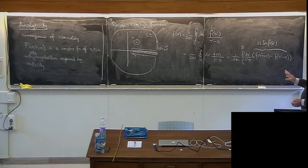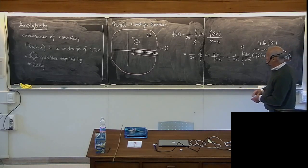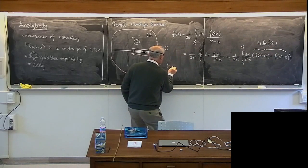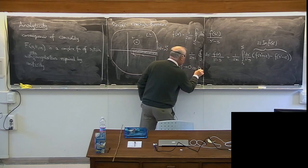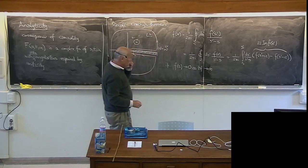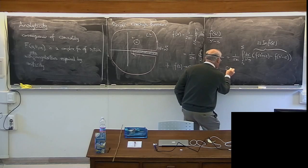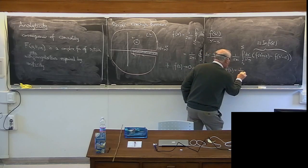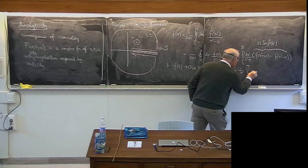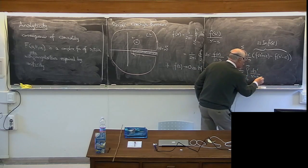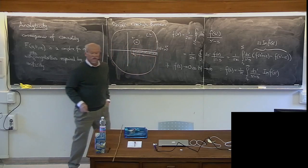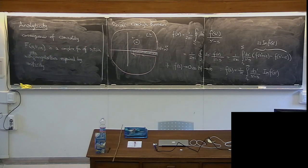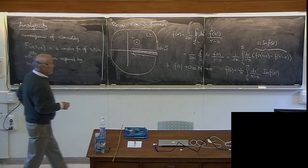If the function doesn't go to zero at infinity, then you have to do something else — we'll come to that in a minute. But if f(s) goes to zero as the modulus of s goes to infinity, then we have: f(s) equals 1 over π times the integral from s_t to infinity of ds' over (s' minus s) times the imaginary part of the amplitude. So we just have the integral along the cut, and if we treat f as the forward scattering amplitude, it would tell us what it is everywhere.